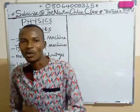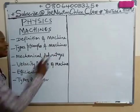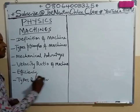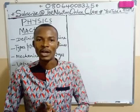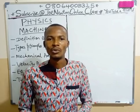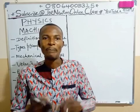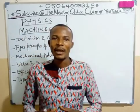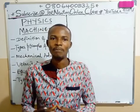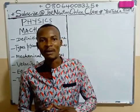Now, what is a machine? Let's look at the concepts we are going to discuss on machines. We have definition of machine, types and examples of machines, mechanical advantage, velocity ratio, efficiency, and types of lever. The next class we delve into calculations. A machine is essentially any device or tool which allows the effort applied at one point to overcome a resisting force known as load at the other point. A machine is important in the sense that it makes work easy and also saves time and energy.